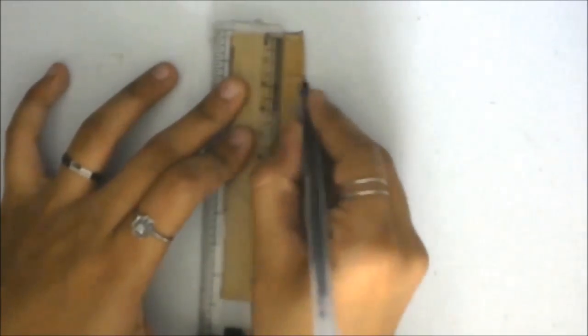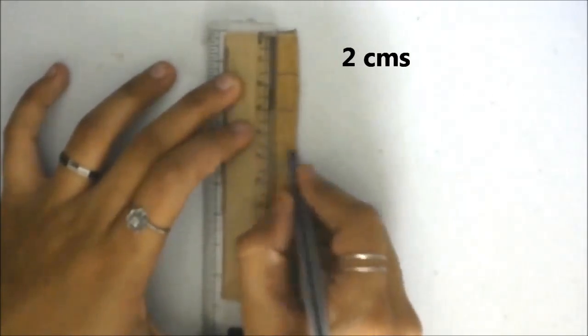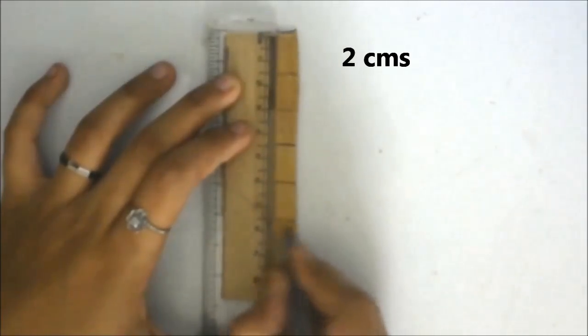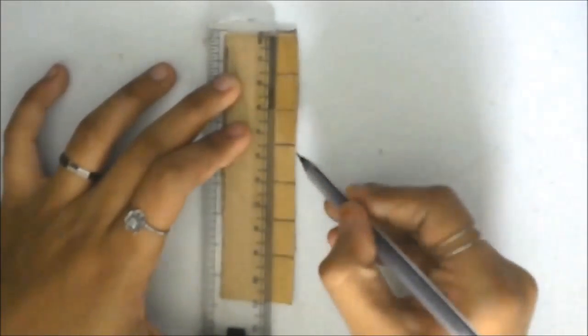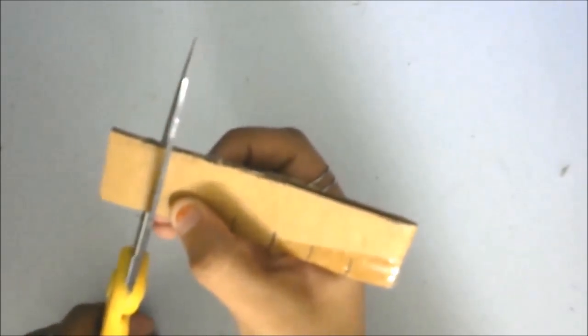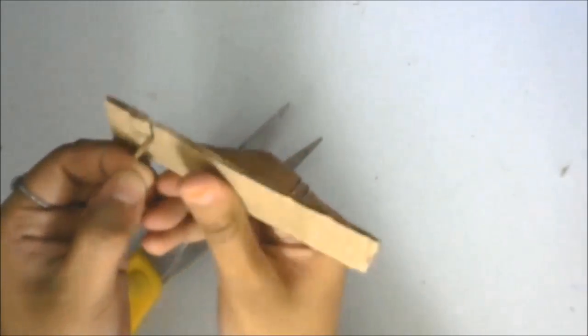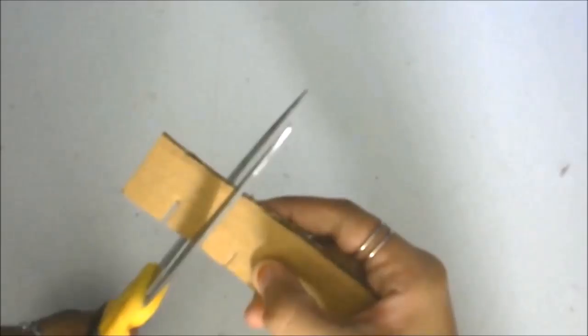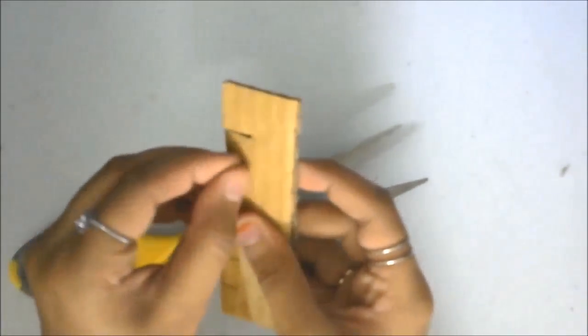Now take one of them and mark at every two centimeters as I'm doing in the video, so you should get six such markings. If you're getting more than that, just adjust the length of the rectangle sheet. Now make small slits along the markings using scissors. Keep on cutting the slits until you reach the final one, that is the sixth one.